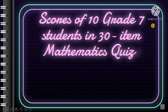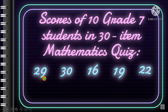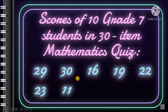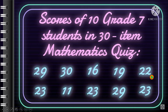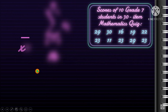To understand better how to compute for the mean, here are the scores of 10 Grade 7 students in a 30-item mathematics quiz: 29, 30, 16, 19, 22, 23, 11, 23, 29, and 23. How do we compute for the mean?